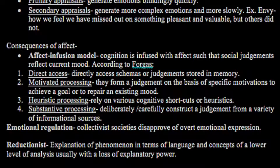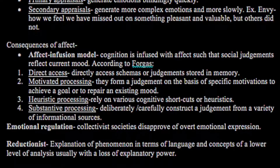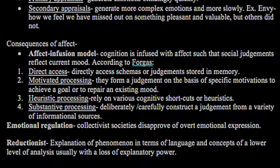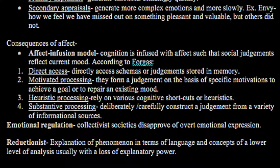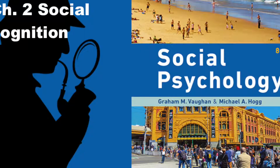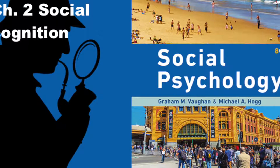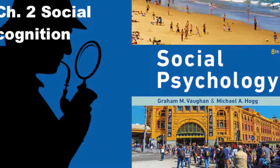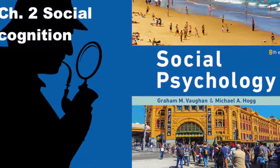In summary, this video covered social cognition and thinking, including how we form impressions of other people, the social schemas and categories we use, how we use and acquire as well as change schemas, social encoding, memory for people, social inferences, and how affect and emotion influence social cognition.